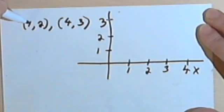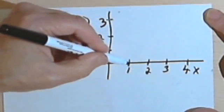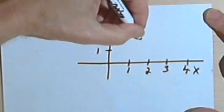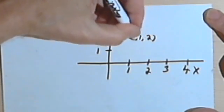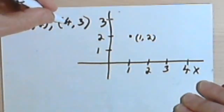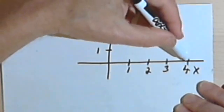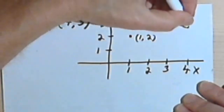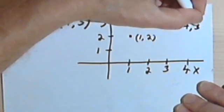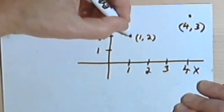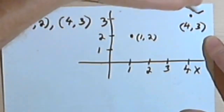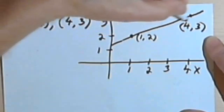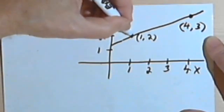And this point, 1 comma 2, well that would be, let's see, 1 and 2. So that would be right here. That's 1 comma 2. And the second point, 4 comma 3. So I've got a 4 here and a 3. So I'm probably about here. And what we want to do is figure out if we draw a line through those two points, what would the slope of the line be?